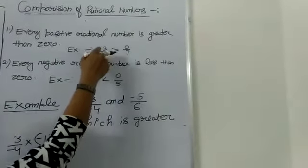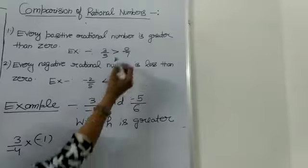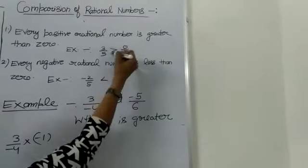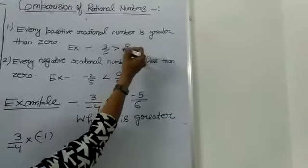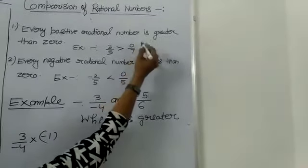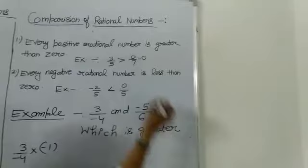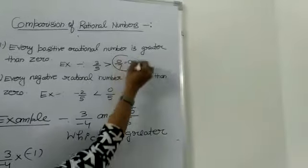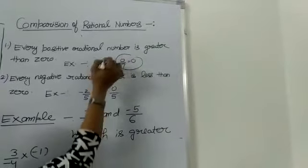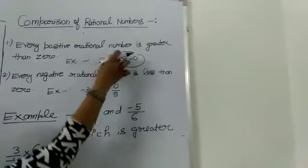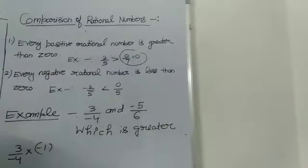For example, 3 upon 5 is a positive rational number, so it will be greater than 0 upon 7, because 0 upon 7 is also equal to 0. That's why 3 upon 5 will be greater than 0 upon 7.